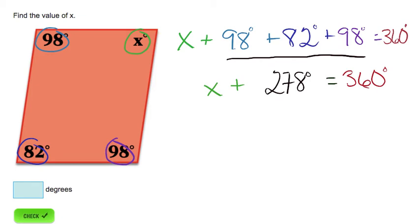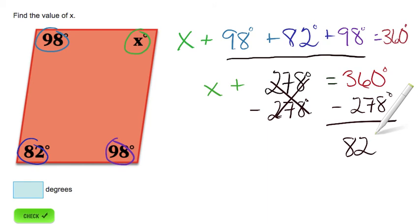All we have to do is subtract 278 degrees from both sides of this equation. That's going to tell us our value of x. 360 degrees minus 278 degrees equals 82 degrees, so x equals 82 degrees.